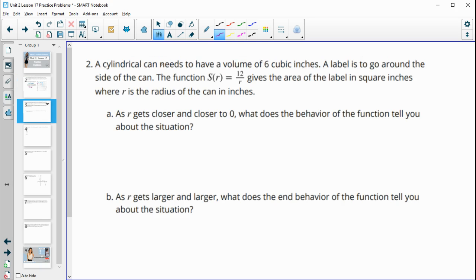Number two, a cylindrical can needs to have a volume of six cubic inches. A label is to go around the side of the can and the function S of R equals 12 divided by R gives the area of the label in square inches where R is the radius of the can. So as R gets closer and closer to zero, what does the behavior of the function tell you about this situation?